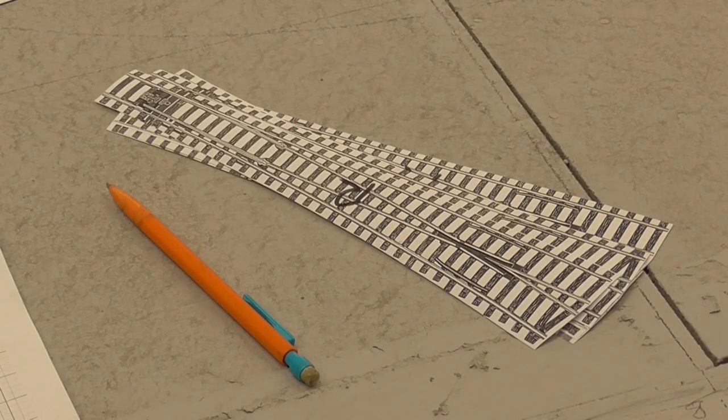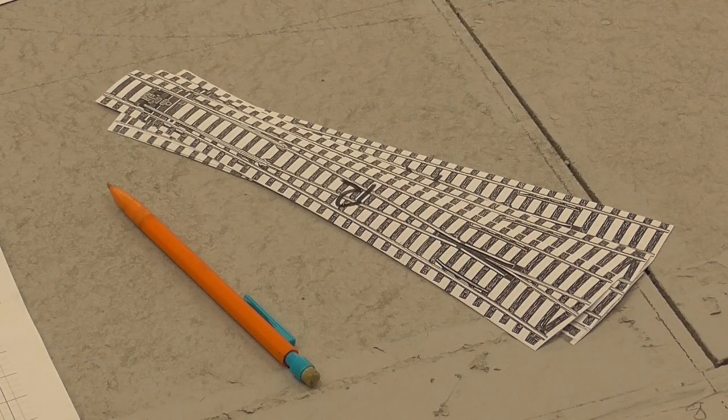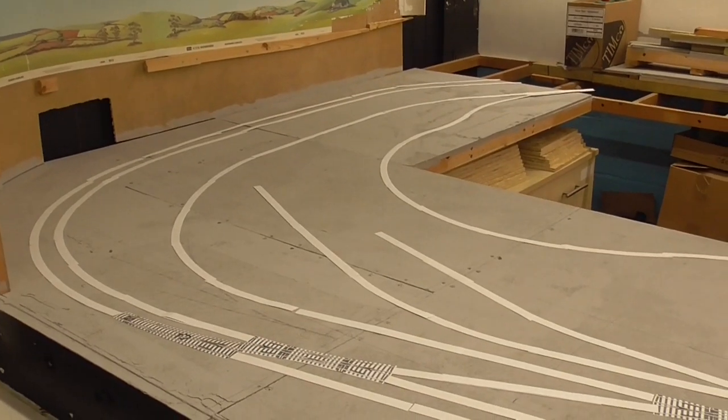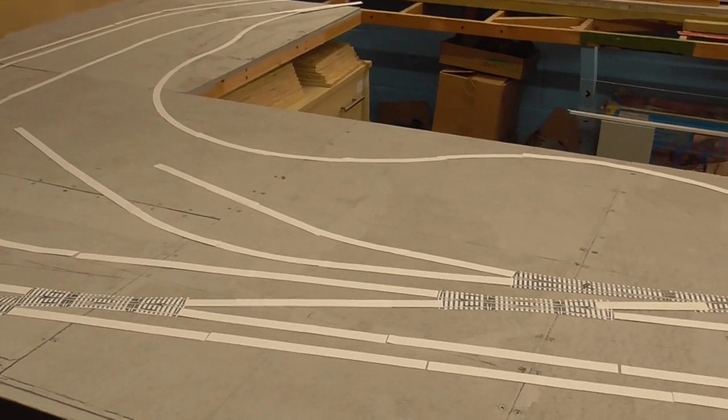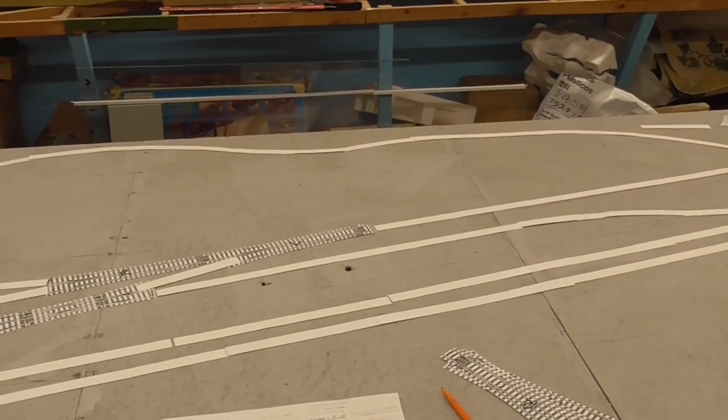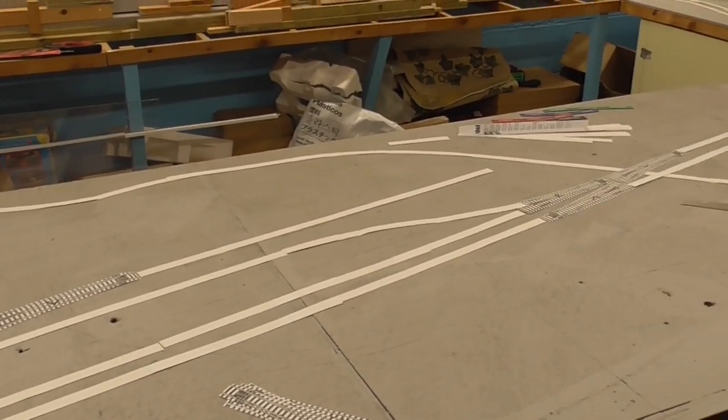A paper template of the track plan was first laid onto the cleared baseboards. The template provides a helpful guide for marking out the radius and location of curves and point work, as well as gauge what track will be needed for the project.